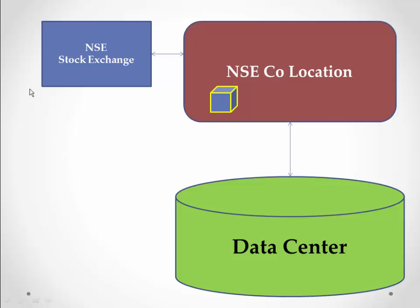An HFT trader keeps his server system and setup in the colocation. This HFT trader also connects his server, or ATS (Algorithmic Trading System), to a server system in the nearest data center. Control and access to this ATS is through the internet. That is how these systems work.